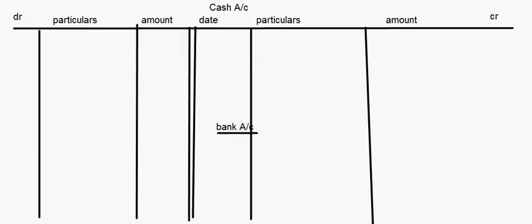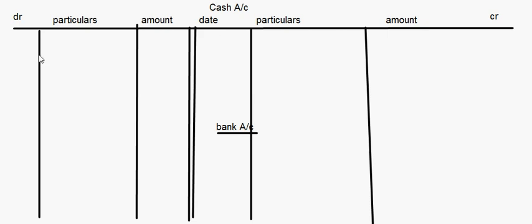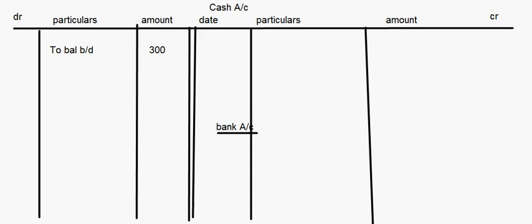Let's start with the posting. First, the cash account balance is Rs. 300 and it is a debit balance, so it comes on the debit side as 'balance brought down' — Rs. 300. For bank account, the balance is Rs. 7,000, again a debit balance, so we write 'balance brought down Rs. 7,000'.